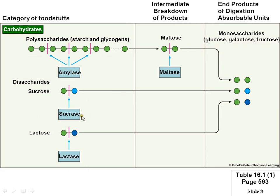Enzymes typically end in '-ase.' Amylase, sucrase, lactase, and maltase — they usually tell you what they break down. Maltase breaks down maltose; lactase breaks down lactose. Lactose is a disaccharide — two sugars. If you can't break it into a monosaccharide, you can't absorb it. People who are lactose intolerant are missing that enzyme. Most of us have lactase to split it, but those who lack it can't absorb lactose.